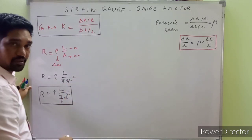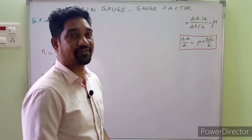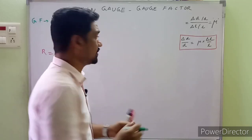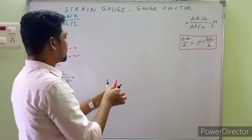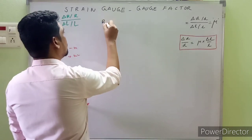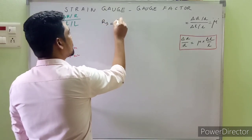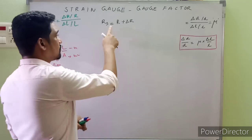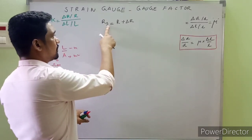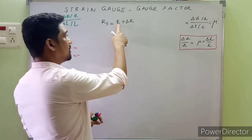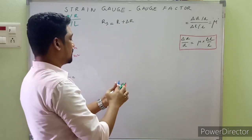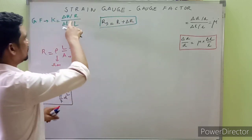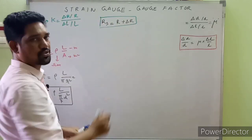On the other hand, when the metal wire is subjected to strain, it undergoes a change in resistance. The resistance under strain, Rs, can be written as the initial resistance R plus the change in resistance δR. All these expressions will be plugged in to obtain the final expression for the gauge factor.